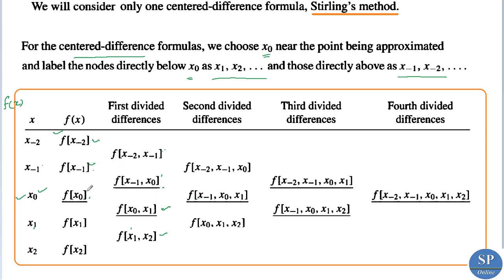The only difference here is that the notations are changed. For backward and forward differences we use the notations x₀, x₁, x₂, etc. But for the center difference formula we choose x₀ near the point we need to approximate. The difference formulas themselves are the same — only the notation differs.